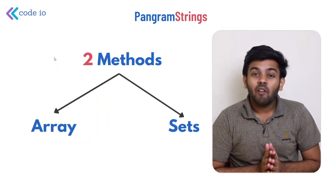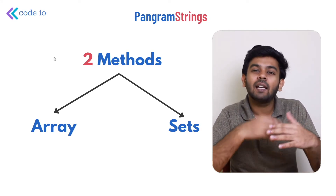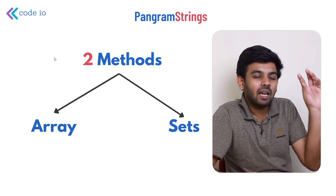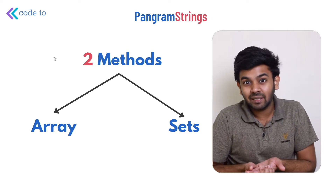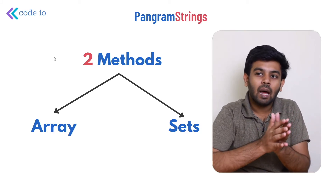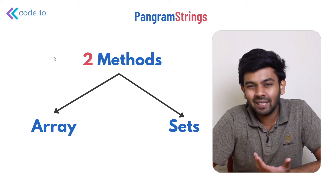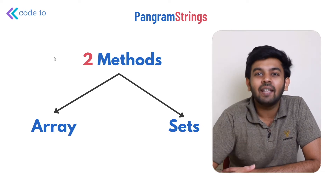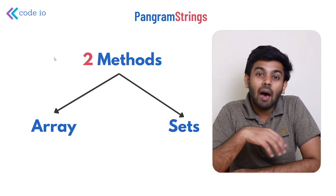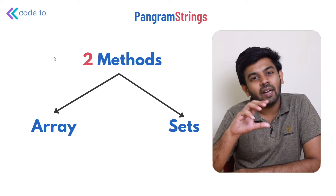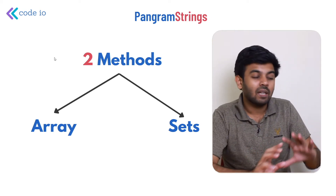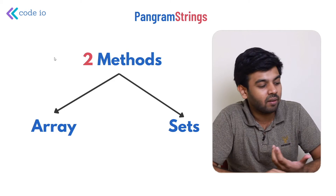There are a couple of ways to solve this problem. The first is to have an array of size 26 and keep track of all alphabets present in the string — if 'a' is encountered we mark index zero as one, for 'z' we mark index 25. The other way is using sets: insert all characters from the string into a set, which stores only unique characters, and if the set size is 26 it's a pangram. We'll go with the array approach as it's simpler.